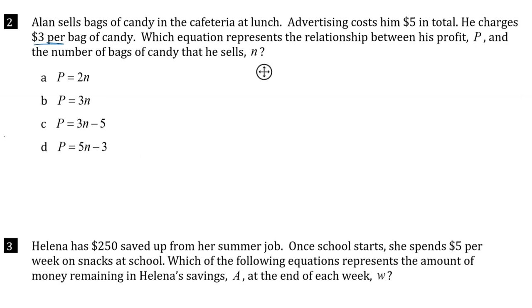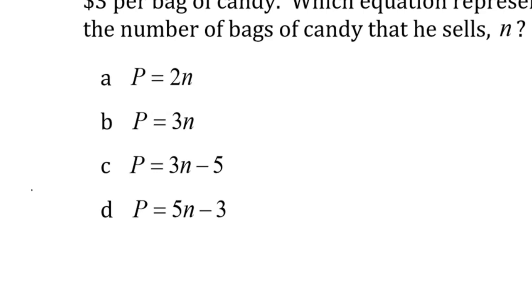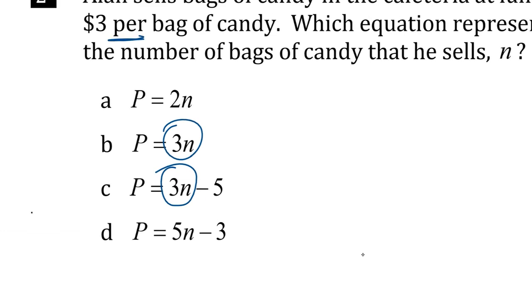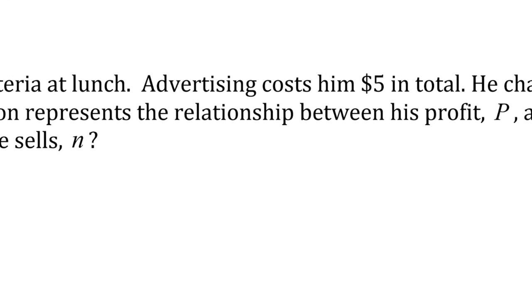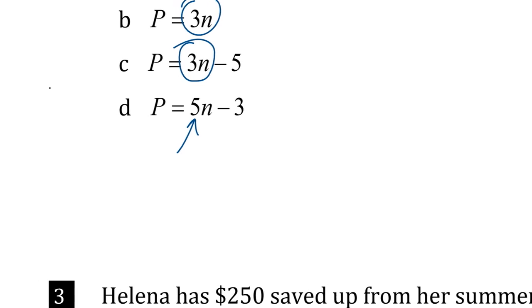So if he is making $3 per bag, that's money he's making. But from that, he has to take away the $5 because that's a cost. So that's money he's losing. So when I look at these, which one looks like I'm losing $5 but I'm making $3 per bag? Well, $3 per bag looks like 3N, doesn't it? Because that 'per' number tells me that's the change and I know the change is what's multiplied by the variable. Maybe somebody thinks it's this because 5 minus 3 is 2. I don't know, but that doesn't make any sense. So this one has a change of $5, but it's not $5 per anything. It was $5 total. One just cost him $5. So it's not that one.